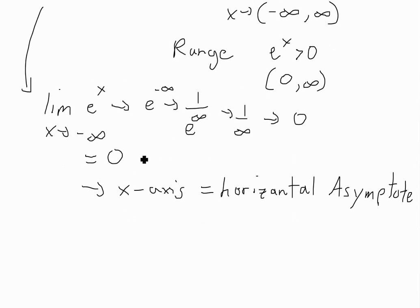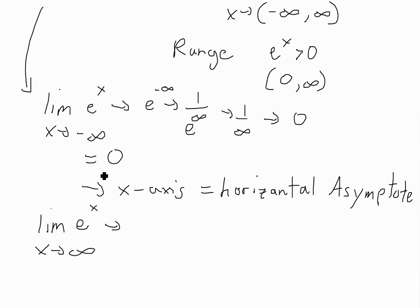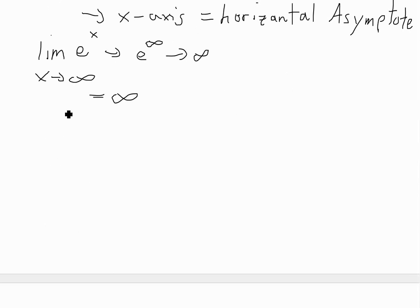It can't get anywhere less than zero. Now when you look at the limit as x approaches infinity of e to the power of x — you just plug it in using an arrow — e to the infinity is just going to be a really large number approaching infinity. So this equals infinity; it's just getting higher and higher.